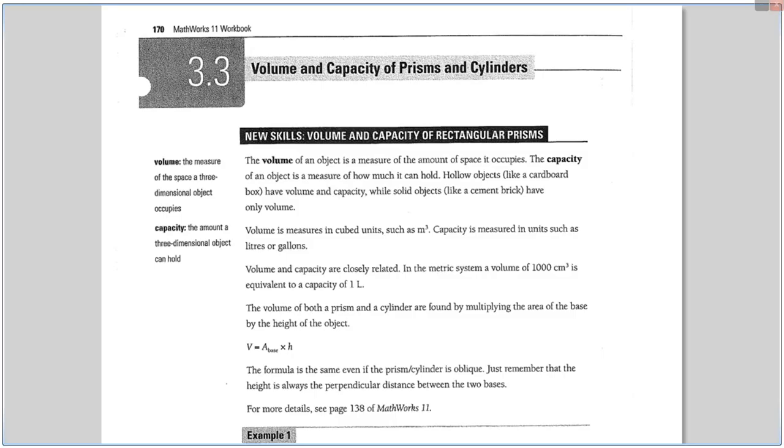Page 170, section 3.3, Volume and Capacity of Prisms and Cylinders. In general guys, volume is always easier than surface area. What is volume? Total space. Just like area, except area is for 2D objects and volume is for 3D shapes.